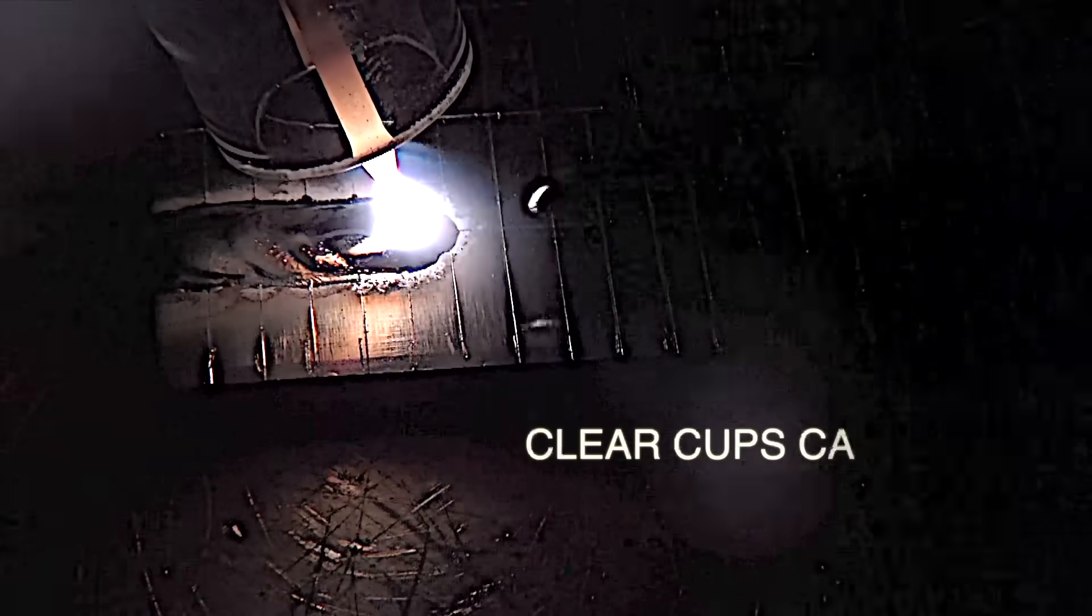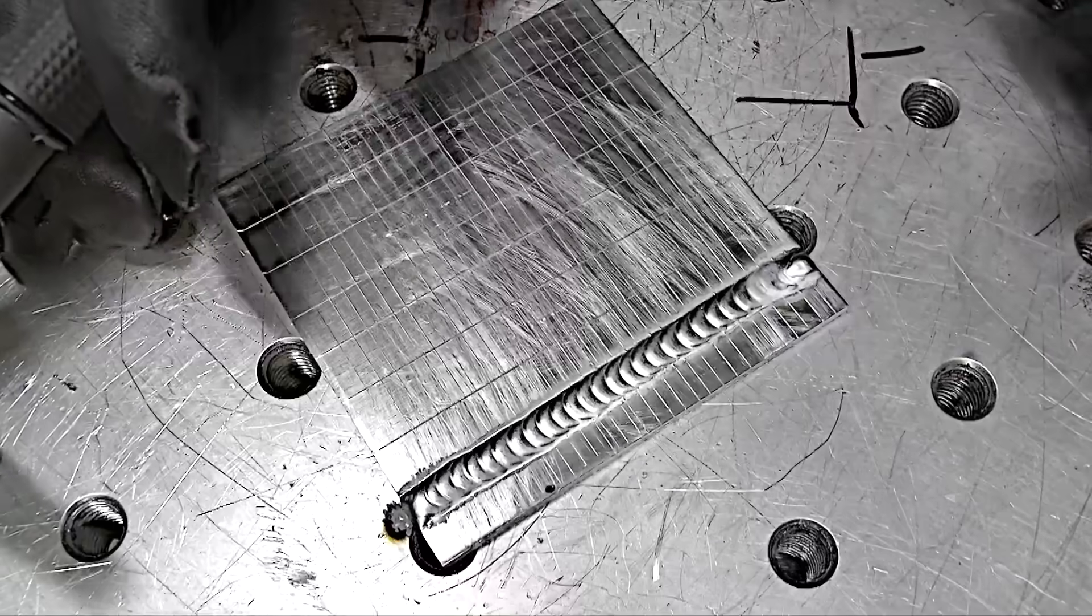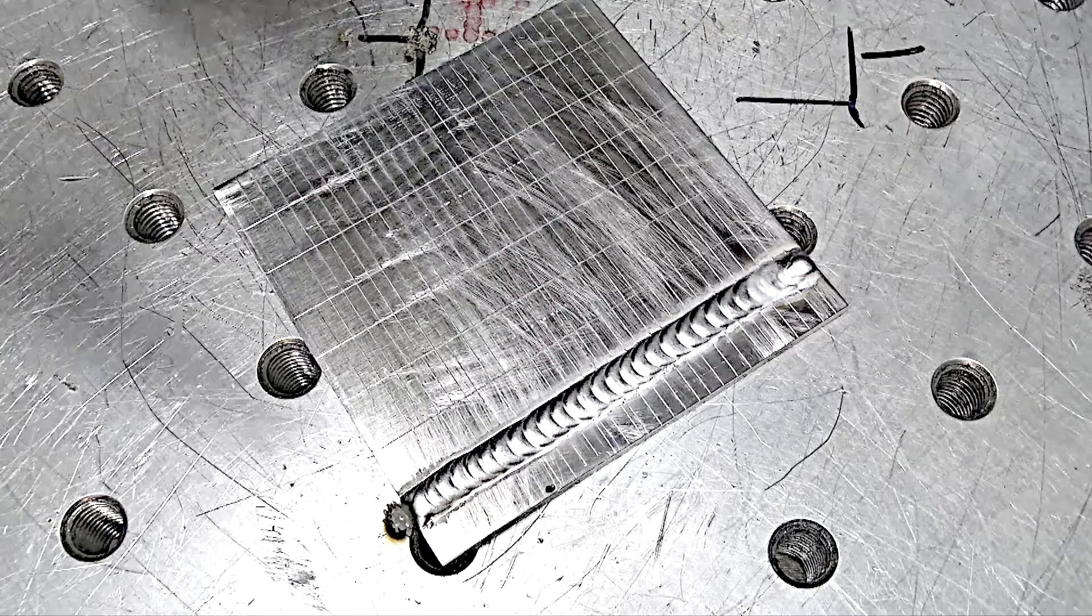Here's another example of travel speed where I have a hash mark every eighth of an inch. You can see I'm covering just about an eighth of an inch every second. That's just a starting point. I find it's a really good place to start for beginners and people learning to TIG weld.